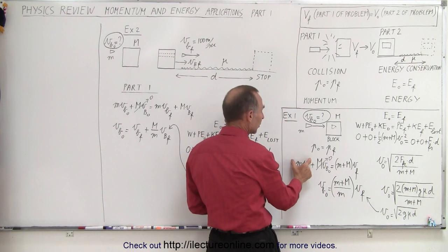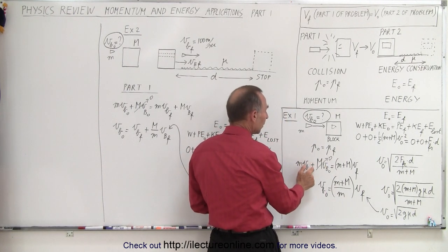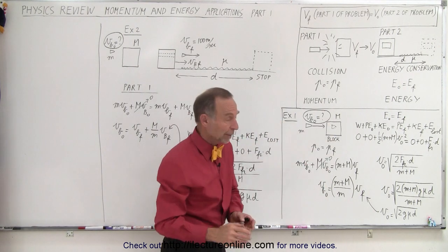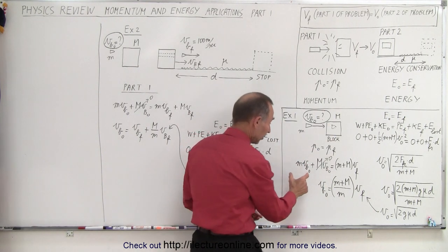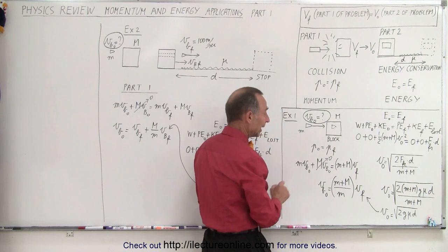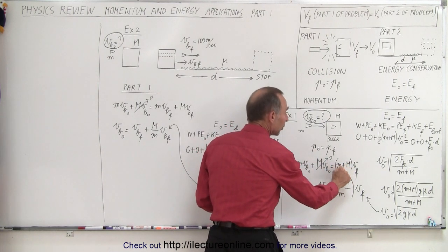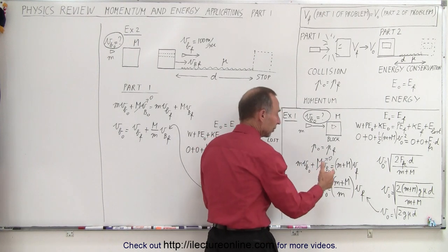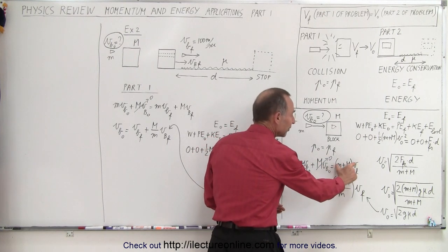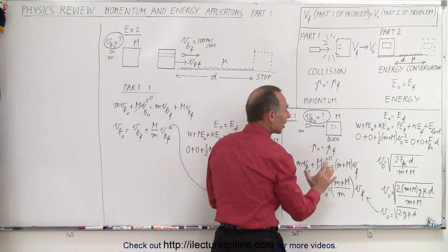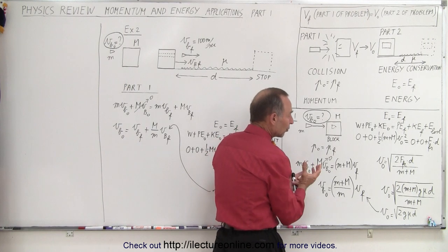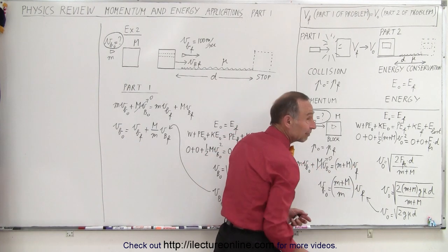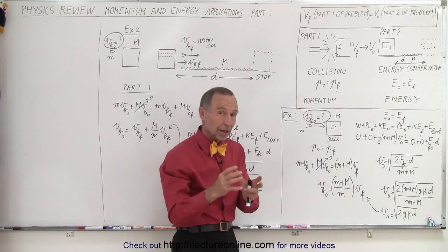The initial momentum is the momentum of the bullet plus the momentum of the block. If the block wasn't moving, it has zero momentum, so it simply becomes the momentum of the bullet. That equals the momentum of the bullet and block combined, which gives you the final velocity of the block and the bullet together.